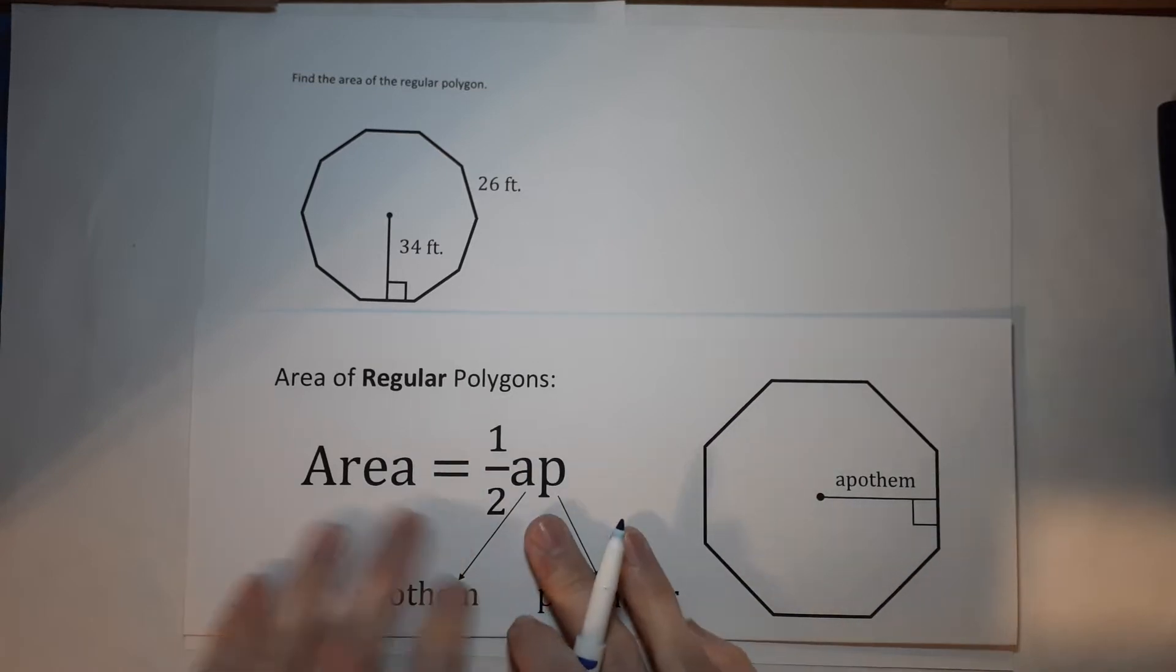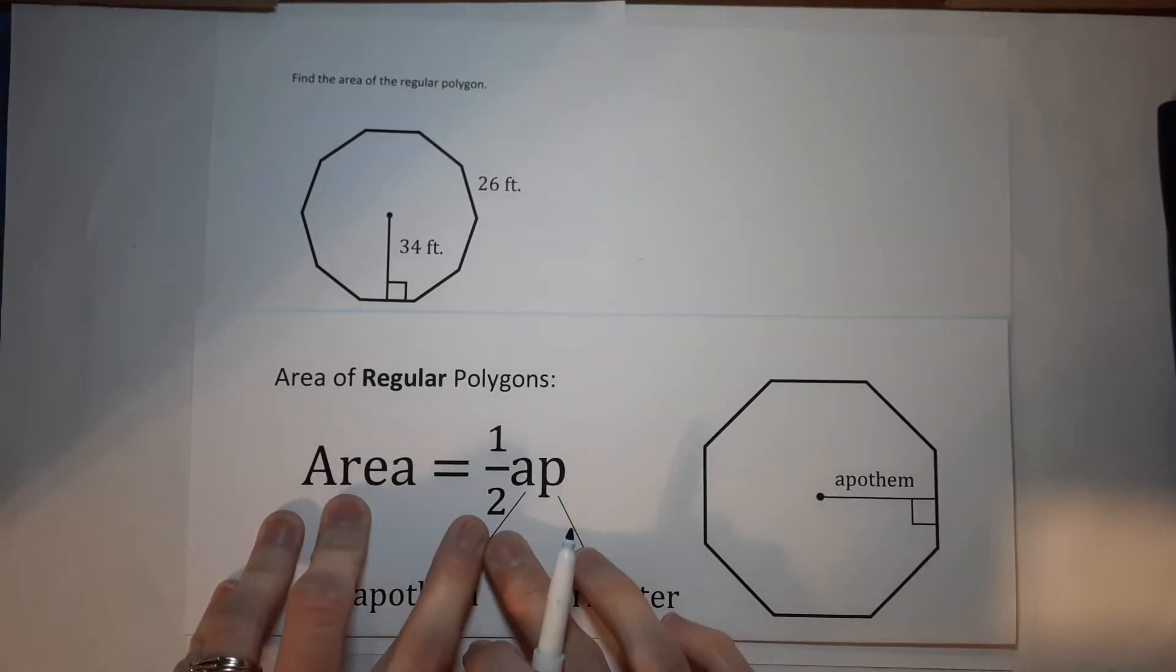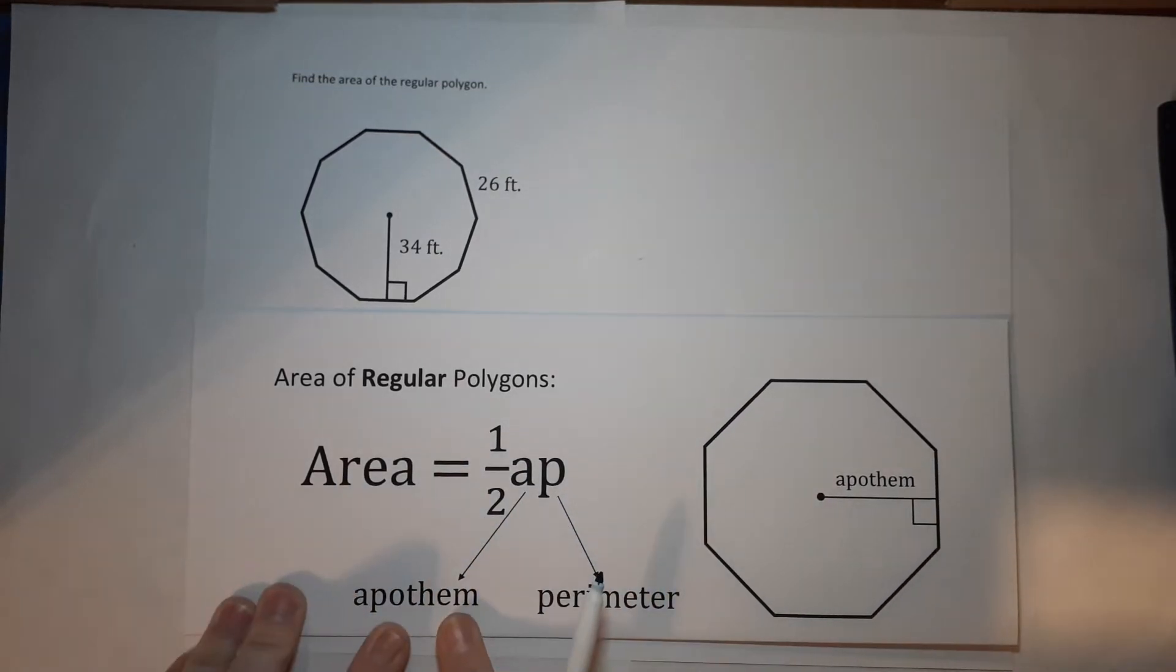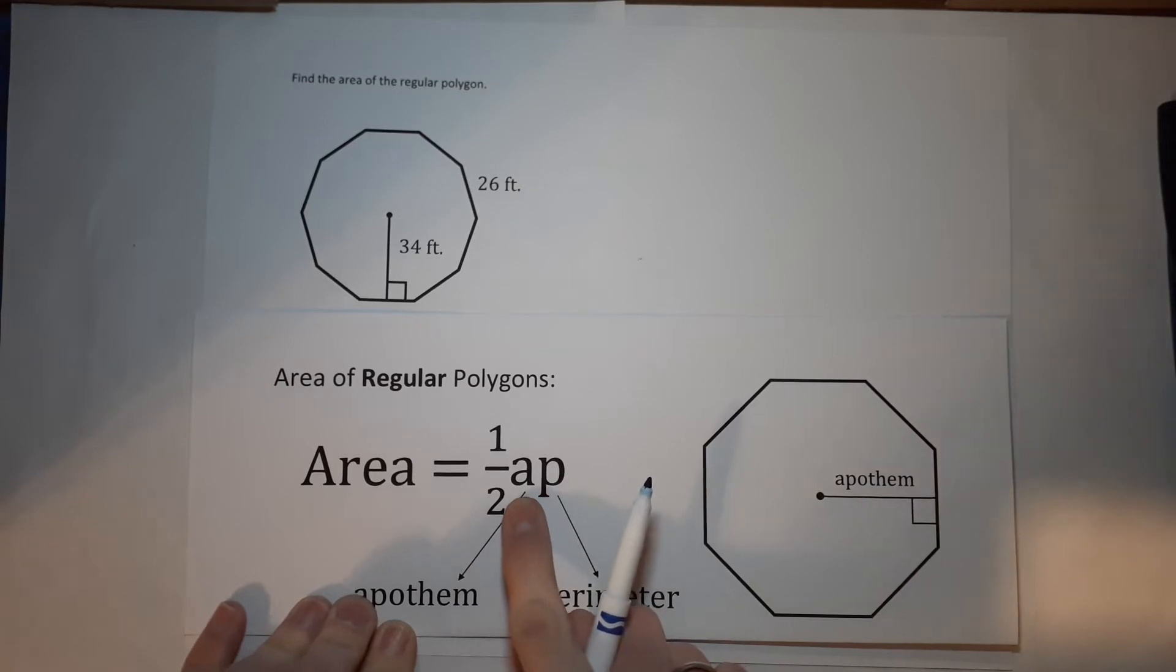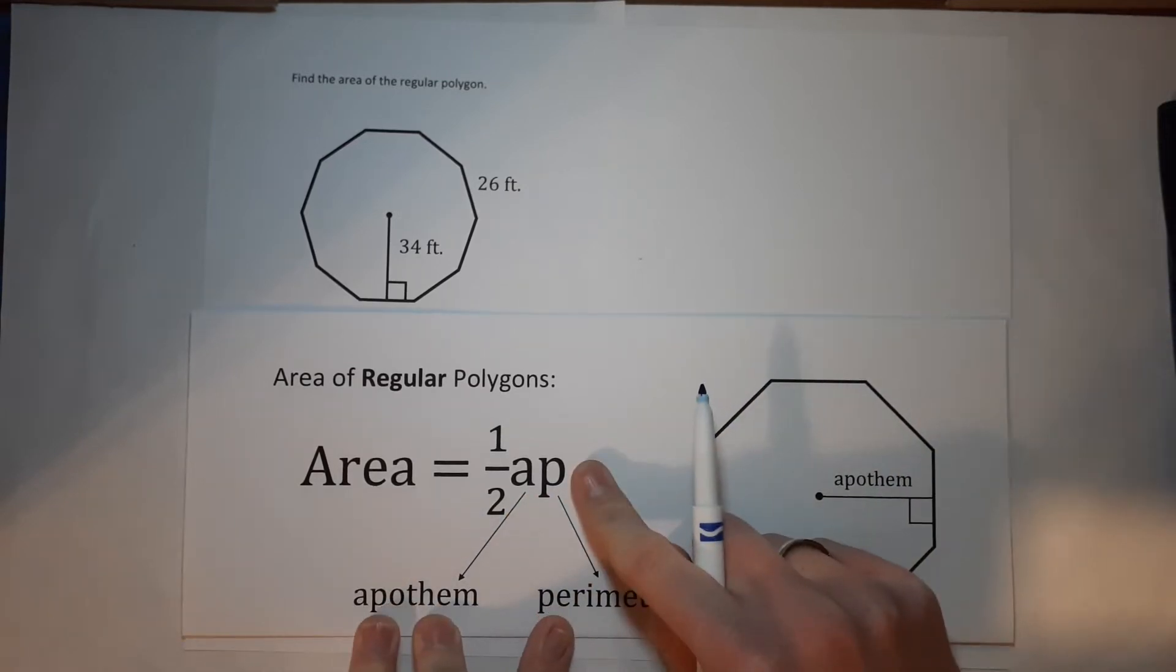So we have the area equals one half times the apothem. What's the apothem? It goes from the center to one of the middle of the sides to make it perpendicular. So it's 90 degrees.